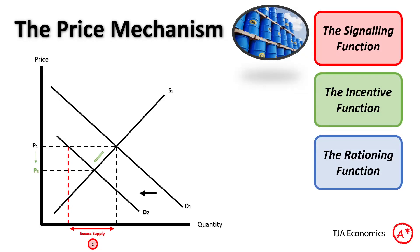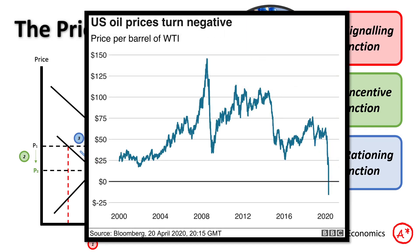Therefore, there is an incentive — in this case for oil producers — to lower their prices. We will move from P1 to P2, and that's our incentive function at work. Lastly, because the price is lowered, the rationing function works: consumers are now more willing and able to buy this product, and that means we're going to end up with a lower price and a lower quantity.